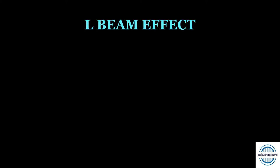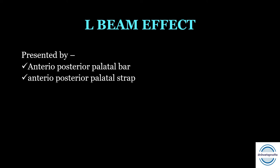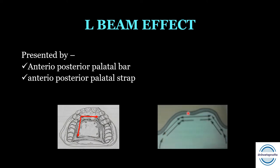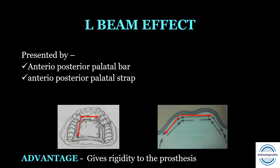The L beam effect is a very important concept — it is asked as a separate short note in theory exams and as a multiple choice question. This L beam effect is mainly applicable to the anterior-posterior palatal bar and the anterior-posterior palatal strap. In the anterior-posterior palatal strap, there are two straps — anterior and posterior — connected by longitudinal flat elements, and these are perpendicular to each other. These bars and straps also lie in different planes of the palate. This produces a structurally strong L beam effect, giving excellent rigidity to the framework. That is why the anterior-posterior palatal strap is the most rigid design amongst all major connectors.